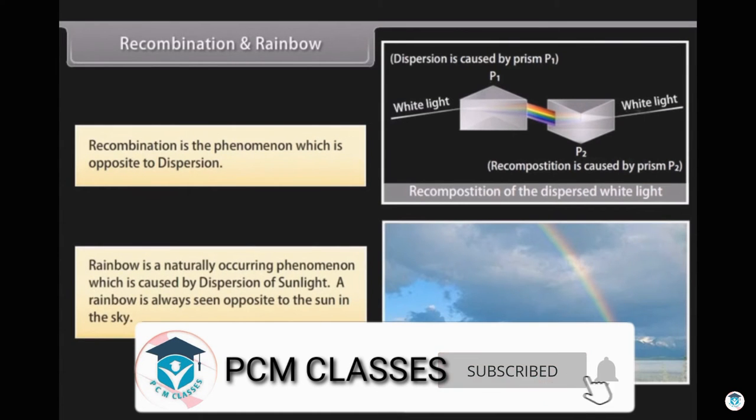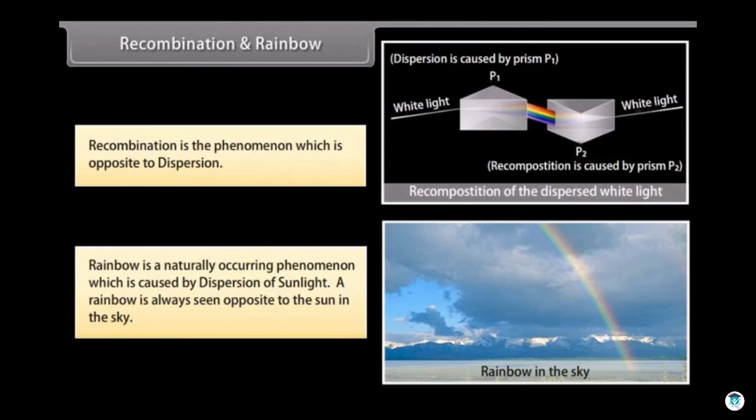We all love to see the lovely view of rainbow after the rains. It is a natural phenomenon which occurs as a result of dispersion. A rainbow is always seen opposite to the sun in the sky. During rain, water drops act as prisms for the sunlight. Water drops refract, disperse, and then internally reflect the sunlight to give the rainbow.